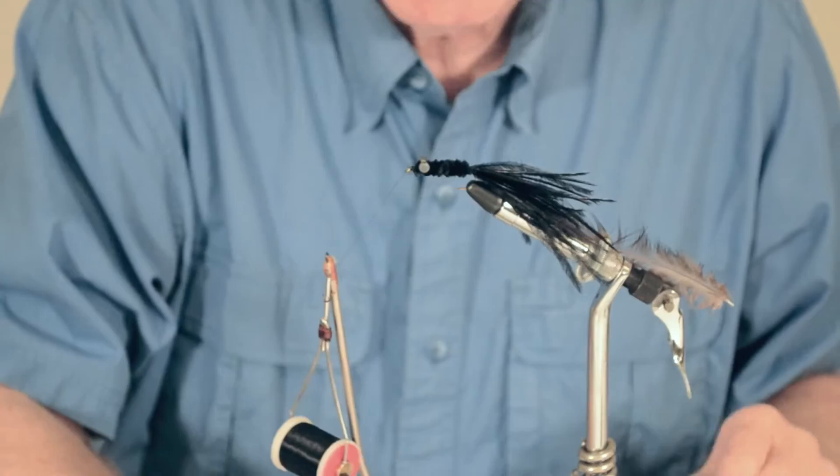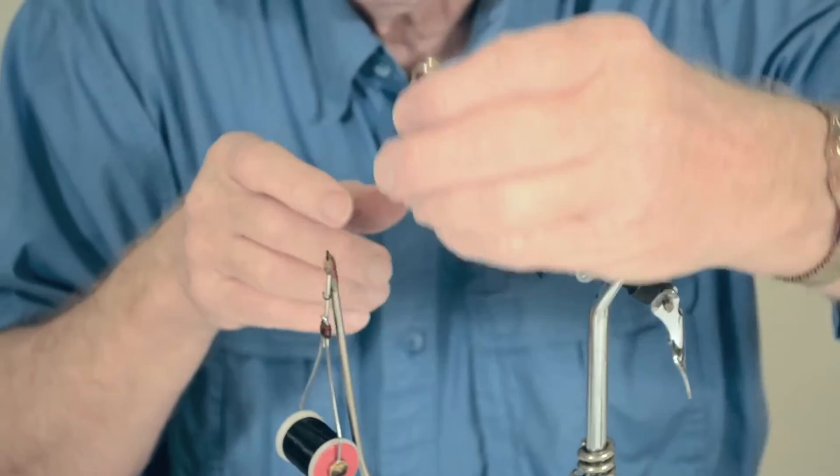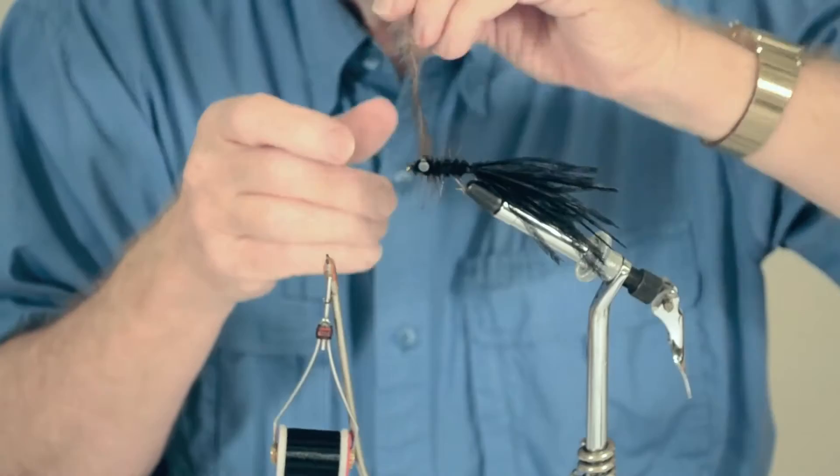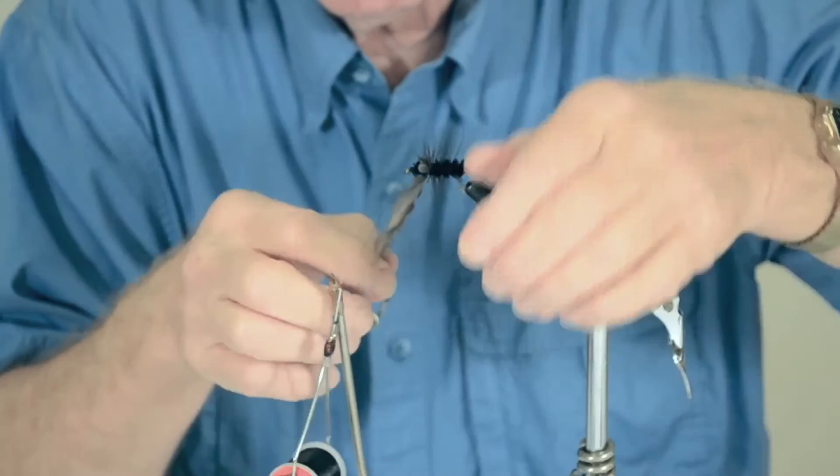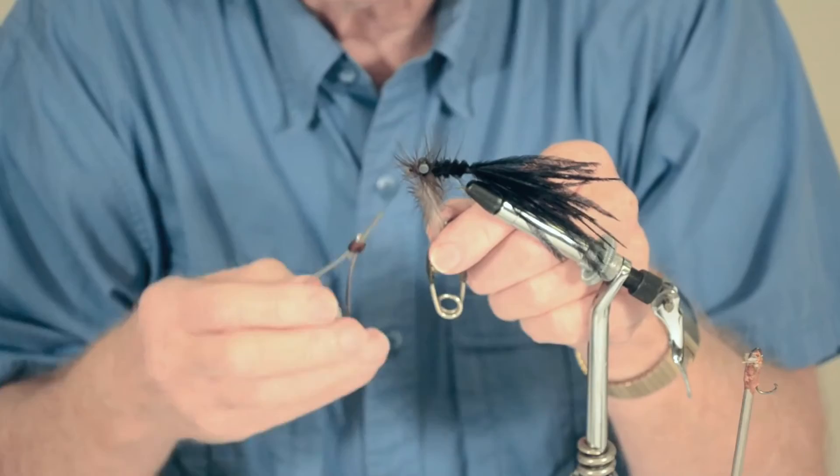Then, get your hackle pliers, get a hold of the center stem of the hackle barbule, and then palmer that up to the eye. Now remember, we have it tied in by the tip, so that's going to make the front of our Helgrammite a little fatter. Just palmer that, that's probably about four, five, six wraps. Get up to there, put a couple wraps behind, and duck through, and a couple wraps in front of. By the time you get up in there, then you're into the soft part of your hackle, which helps enhance that lively motion.